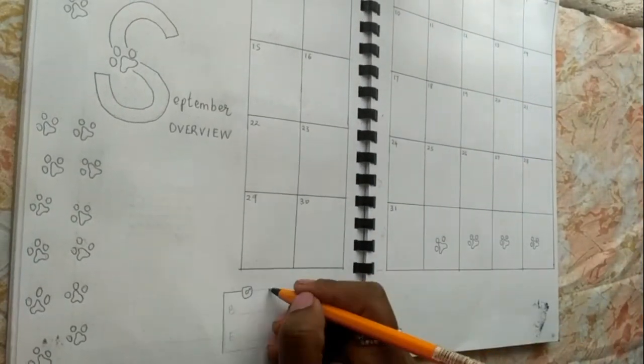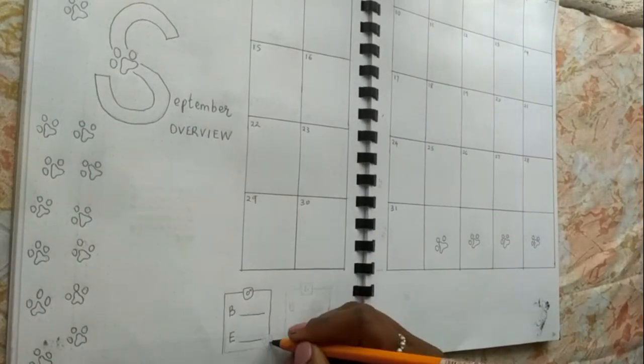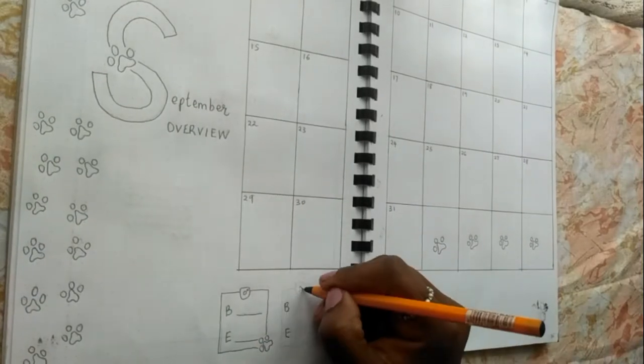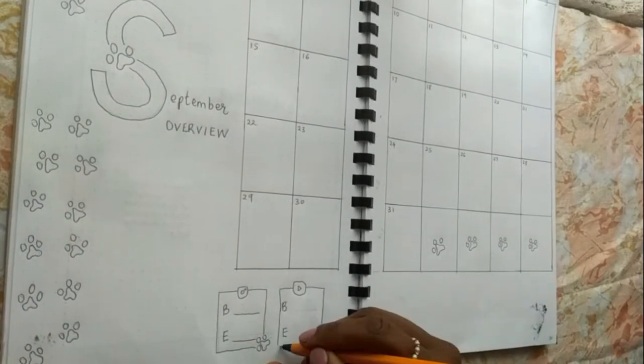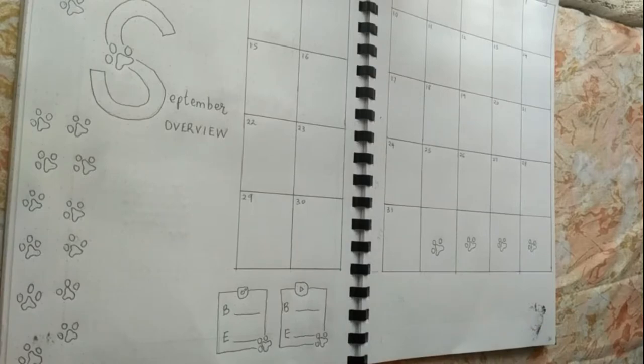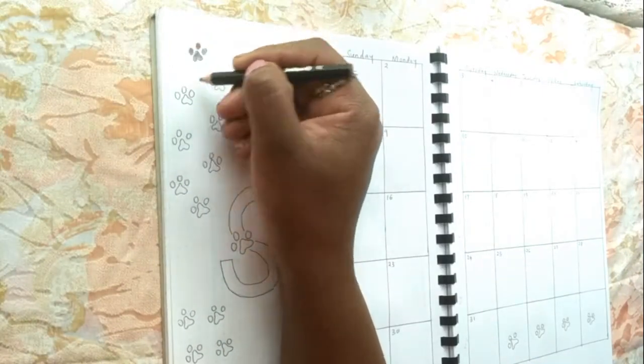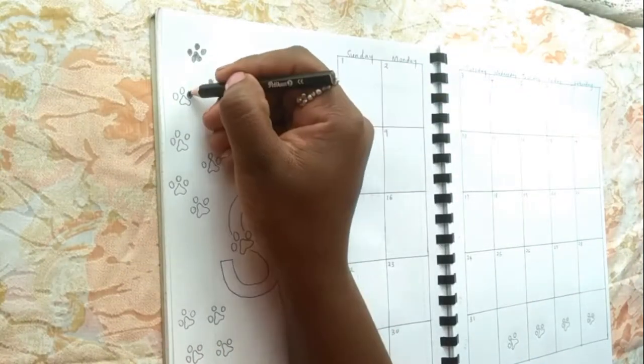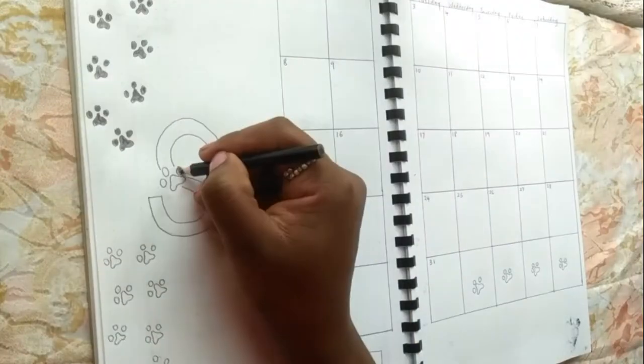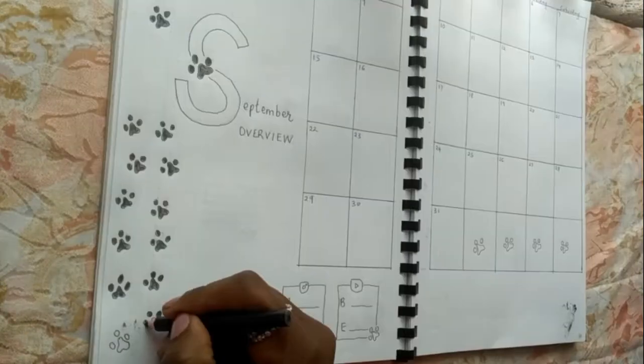Then I went ahead and put in my social media trackers at the bottom, which I do nowadays. To bring in a little bit of color, I decided to shade all the paw prints black and the title, and everything just looked so much better.